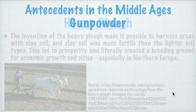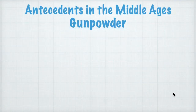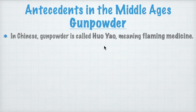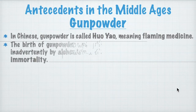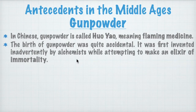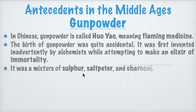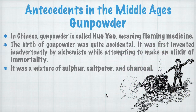The second antecedent is gunpowder, which originated in China where it is called 'huo yao,' meaning 'flaming medicine.' The birth of gunpowder was quite accidental — it was first invented by alchemists while attempting to make what they called the elixir of immortality. It is a mixture of sulfur, saltpeter, and charcoal — please don't mix this on your own at home.